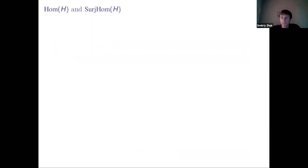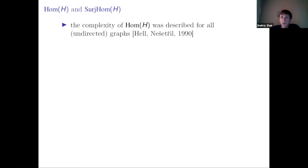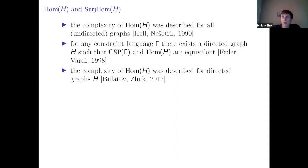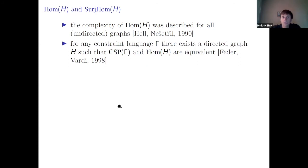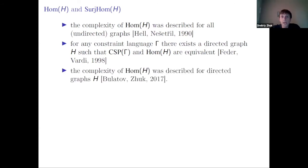What do we know about this problem? The complexity of the graph homomorphism problem for undirected graphs was described in 1990. In 1998 it was proved that graph homomorphism is as general as CSP: for any constraint language gamma, we can find an undirected graph H such that CSP over gamma and homomorphism over H are equivalent. From our result with Andre, we know the complexity for any graph H.